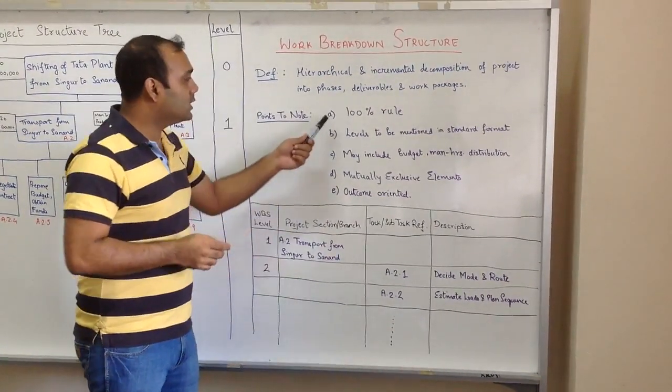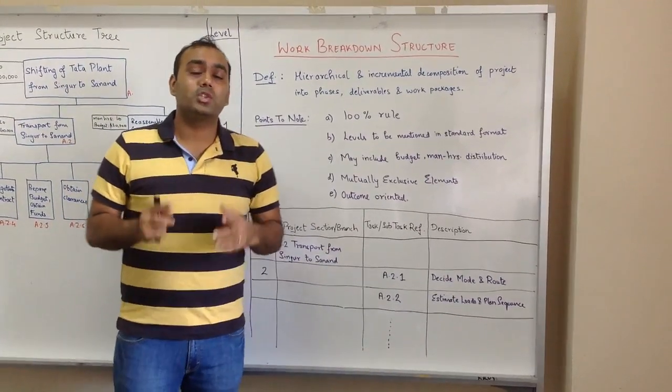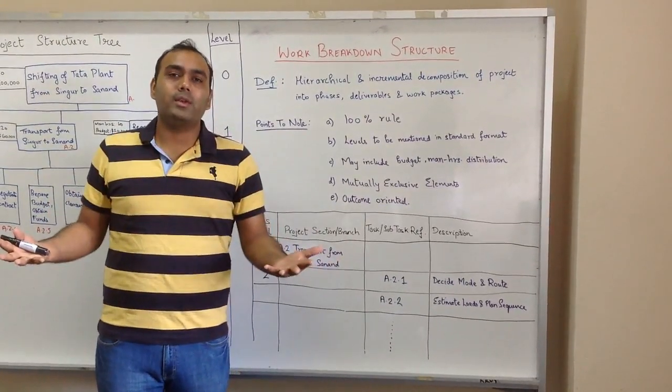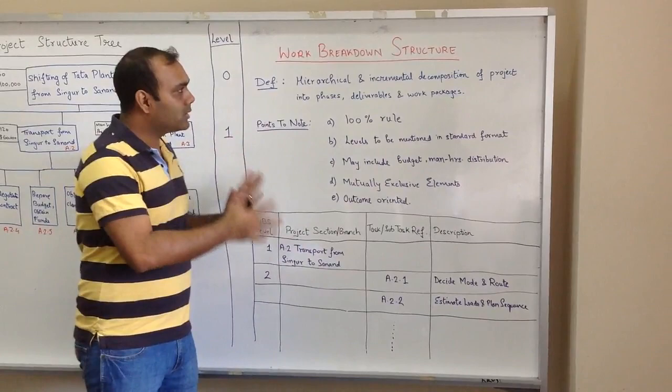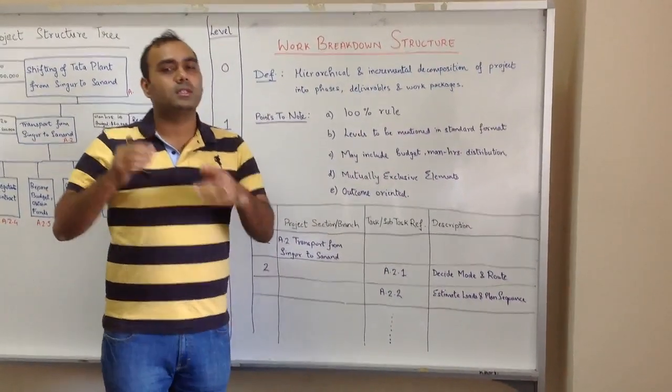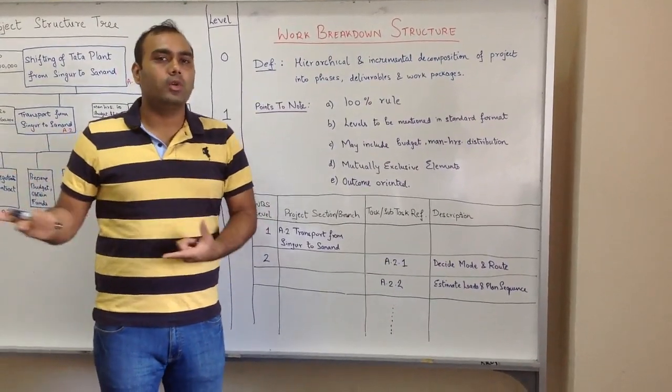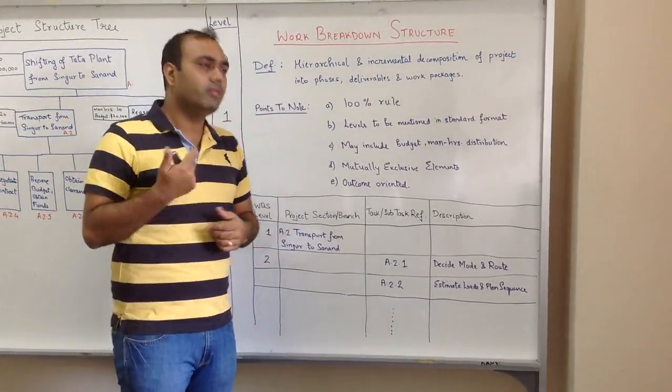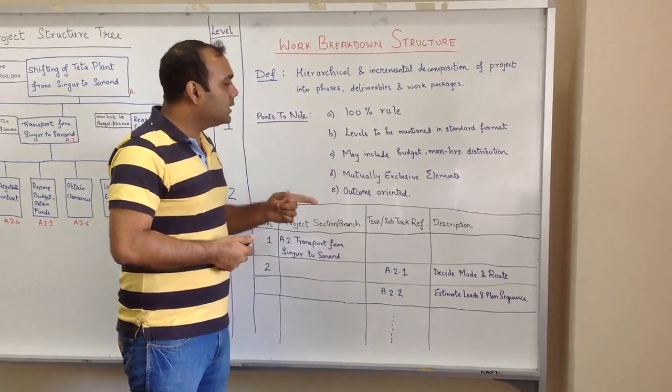There are certain points to note: First, the 100% rule - you should be able to cover all the work in the project within this WBS. Second, levels should be mentioned in standard format. There are certain standard formats on how you make a WBS. Third, it may include budget and manners distribution.